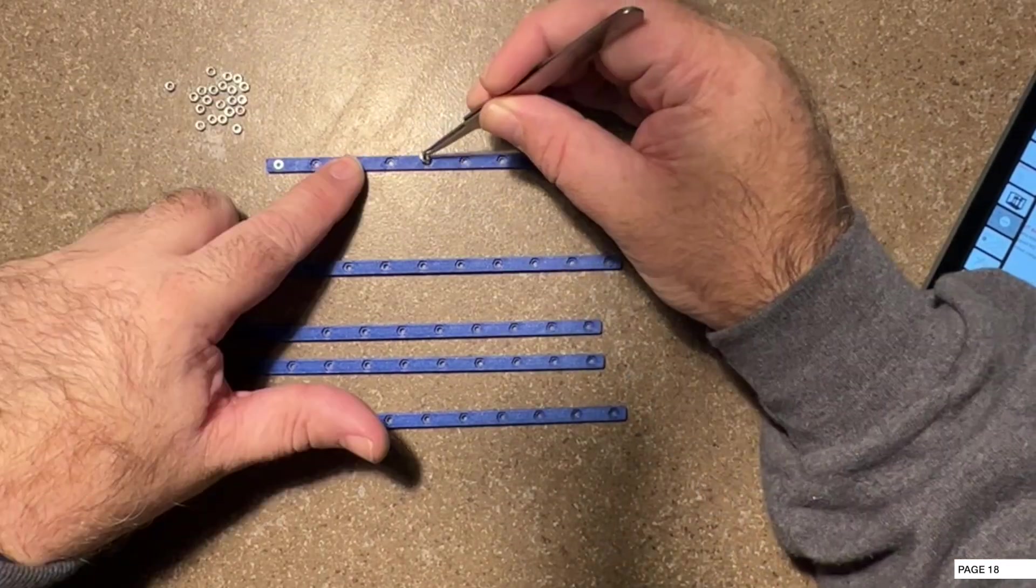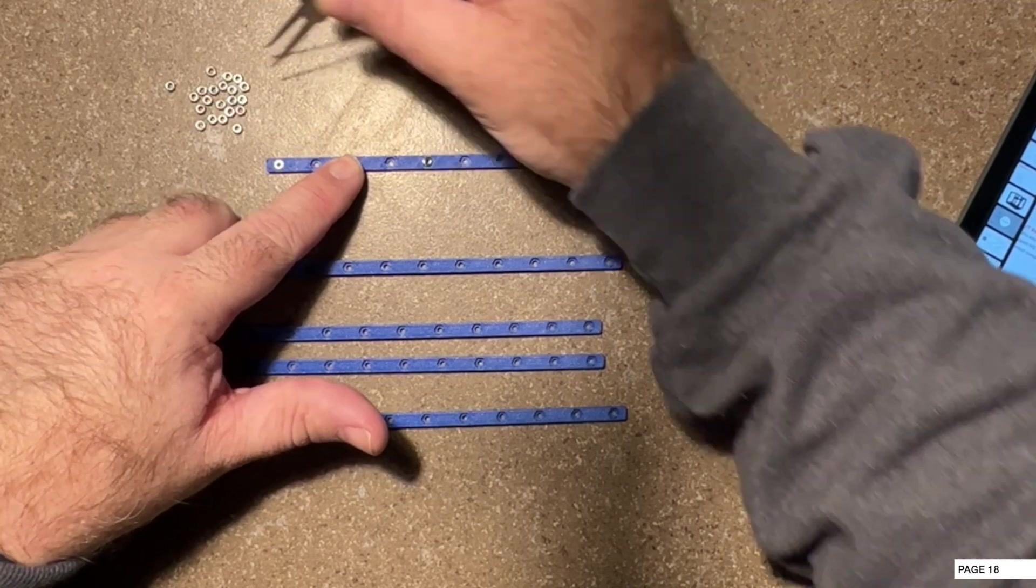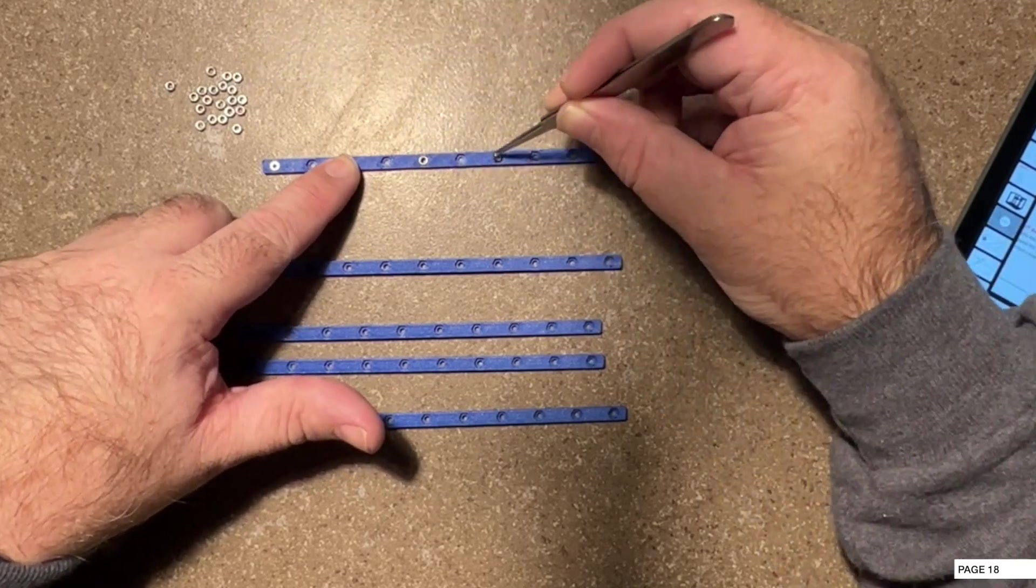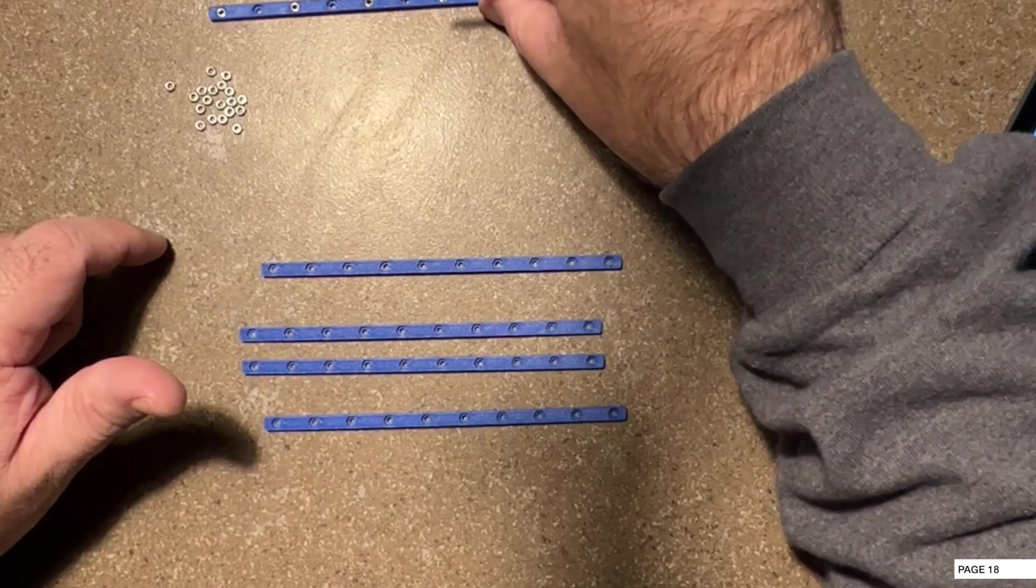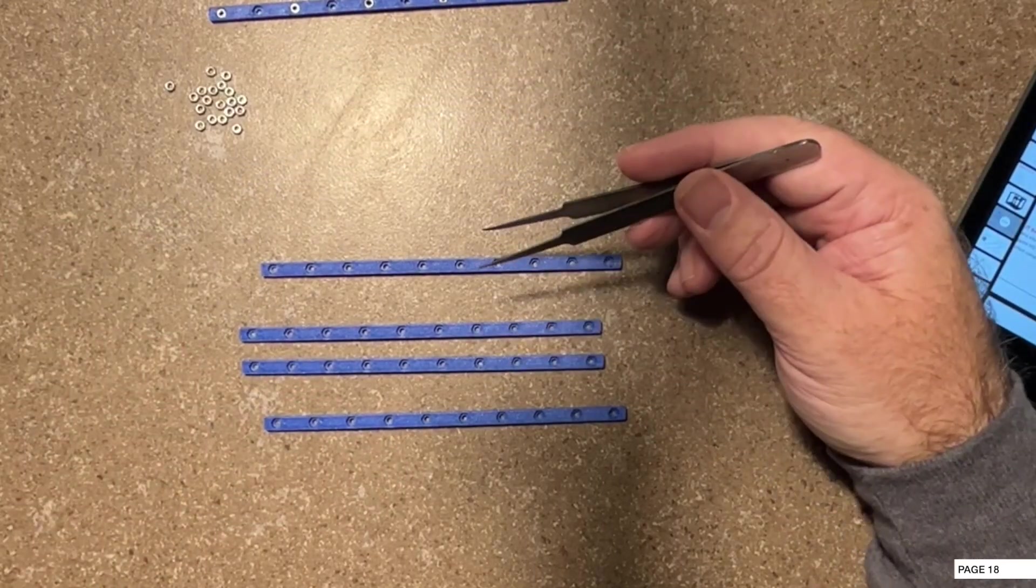Here's the method with the tweezers. I think it's probably a little easier for me because my fingers are a little fat. On the last one you just skip that and leave two. Then we'll just repeat that for the rest of these.